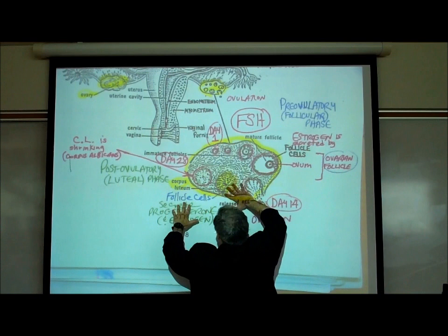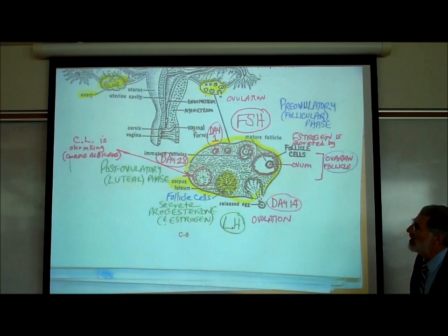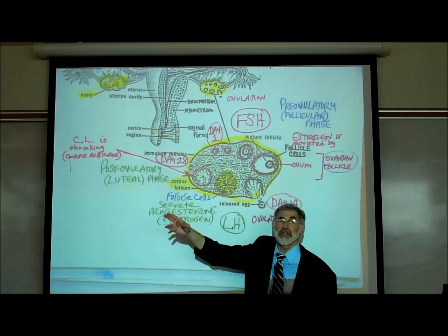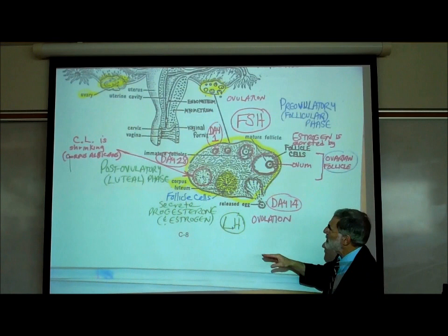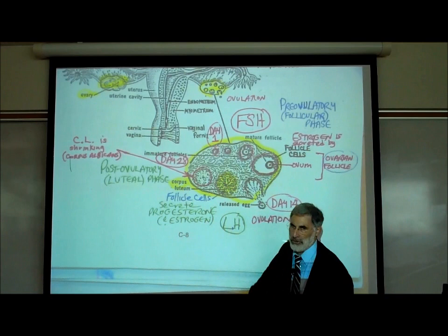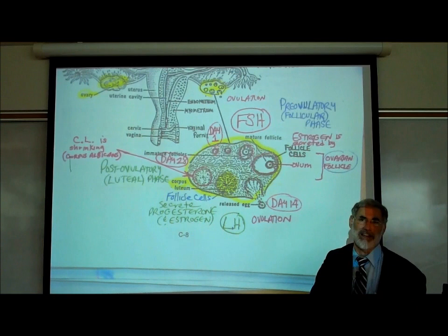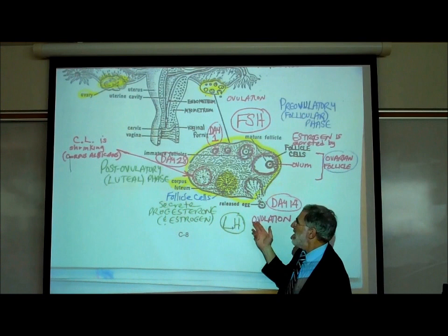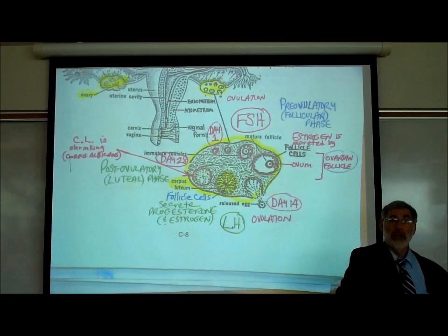What does 'corpus luteum' mean? It literally means 'yellow body' — 'corpus' like a corpse means body, and 'luteum' is Latin for yellow, because the structure looks yellowish under a magnifying lens. It's just the follicle cells remaining after the egg has already popped out. LH causes these follicle cells to secrete progesterone for the next couple of weeks.